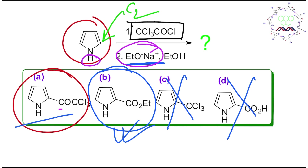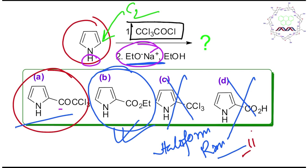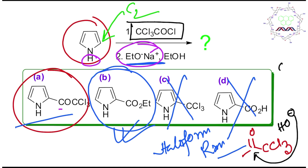By the way, you may have read one named reaction — the haloform reaction. I have already made a dedicated lecture on it. In the haloform reaction, a methyl ketone group gets converted — for example, into chloroform, CCl₃. In the subsequent step, alkali attacks and ultimately produces chloroform (CHCl₃) along with a carboxylate anion. So the second step here is a variation of the haloform reaction — that's why you should learn named reactions properly.